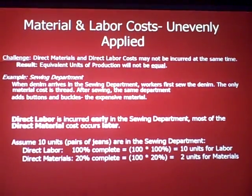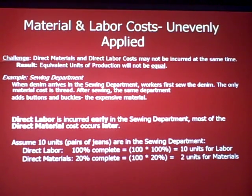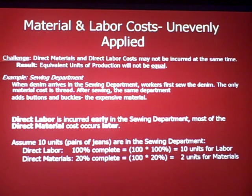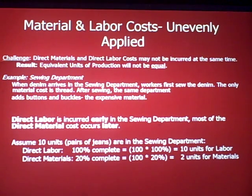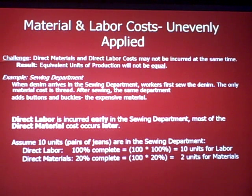There's another challenge: our direct materials and direct labor may not be incurred evenly through the process. Direct material and direct labor may not be incurred at the same time, so equivalent units of production will not be equal. Back to the sewing department example: when denim arrives, workers first sew the denim — the only material cost is thread — so you've got heavy labor costs with inexpensive thread. After sewing, the same department adds buttons and buckles, where there's a lot of material cost and not much labor cost. So direct labor is incurred early, while most expensive material costs come in later.